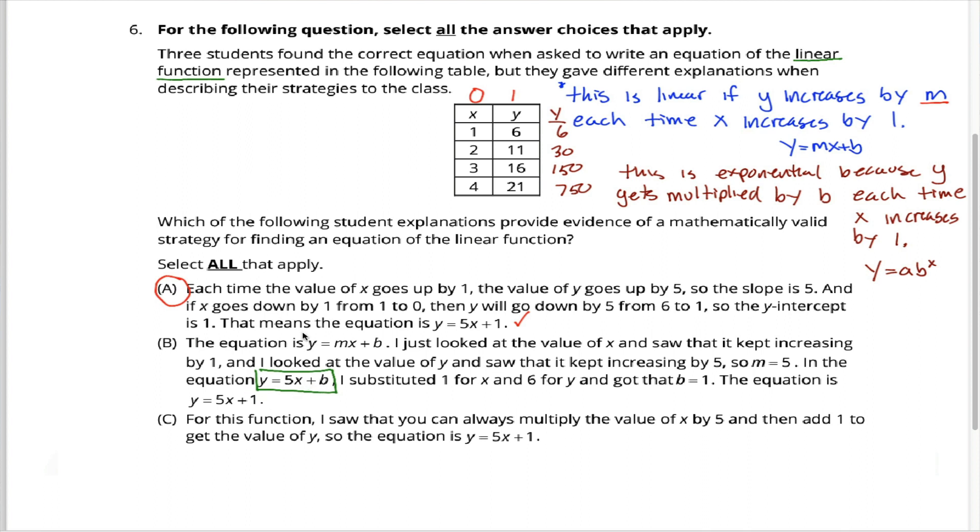However, this equation has to be true for every point on the line. So we can take any x, y pair, it doesn't matter which one, and plug them in for x and y, and we have to get a true equation. This student chose 1 and 6 as the x, y pair to plug in, which is as good as anything, I suppose. If we change the y's into 6's, and change all the x's into 1's, we get this equation, which we know must be true. Clean things up a little bit, we get 6 is equal to 5 plus b. Subtract 5 from both sides, we see that b is equal to 1. The student now knows m and b, so they know the equation of the linear function. B is a mathematically valid strategy for finding the equation of this function.